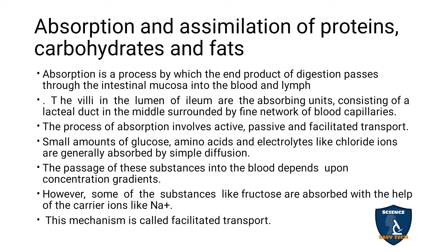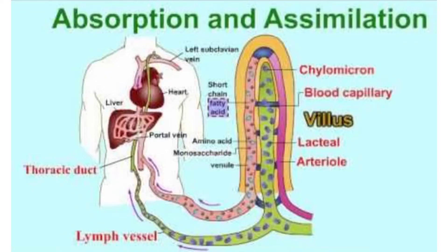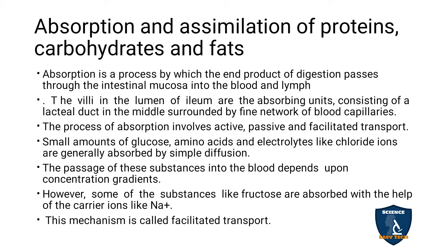The villi in the lumen of the ileum are the absorbing units. They consist of a lacteal duct in the middle surrounded by a fine network of blood capillaries. So this is the villus — the blood capillaries are on the outside and the lacteal duct is in the middle portion.